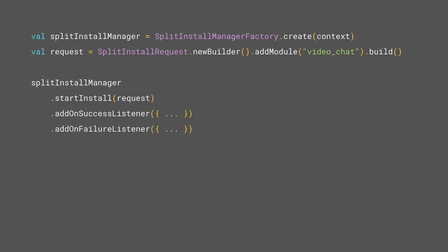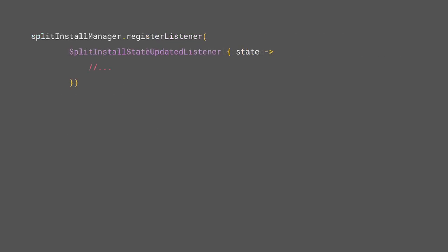The Google Play Core Library enables a few delivery options for Dynamic Features. For example, here's the code for requesting a Dynamic Feature online, typically in response to a user request. The Play Core Library also provides listeners for checking on and being notified when a Dynamic Feature is downloaded.